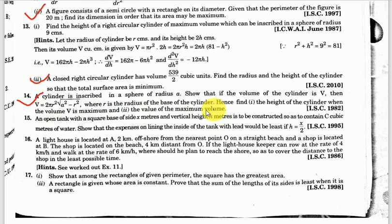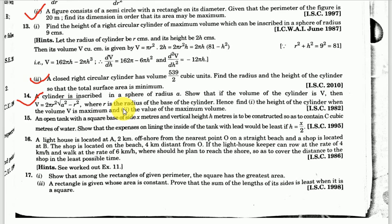Hence find: (1) the height of the cylinder when the volume v is maximum, and (2) the value of the maximum volume. We have a sphere whose radius is a, and we have to find the height of the cylinder inscribed in that sphere and find the maximum volume. We need to write the expression for the volume in terms of a single variable, differentiate it, and find for which value of that variable the volume is maximum.